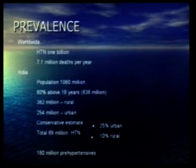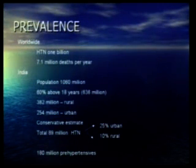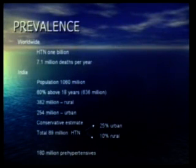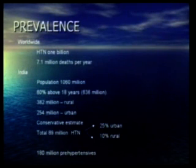According to a conservative estimate, we have a total of 89 million people suffering from hypertension in this country, because the prevalence in urban population is around 25 percent and 10 percent in rural population. But if you add the pre-hypertensive people, this figure becomes very enormous — about 180 million people are suffering from pre-hypertension. So you can imagine: 180 million pre-hypertensive and 89 million suffering from hypertension — a very large chunk of people.